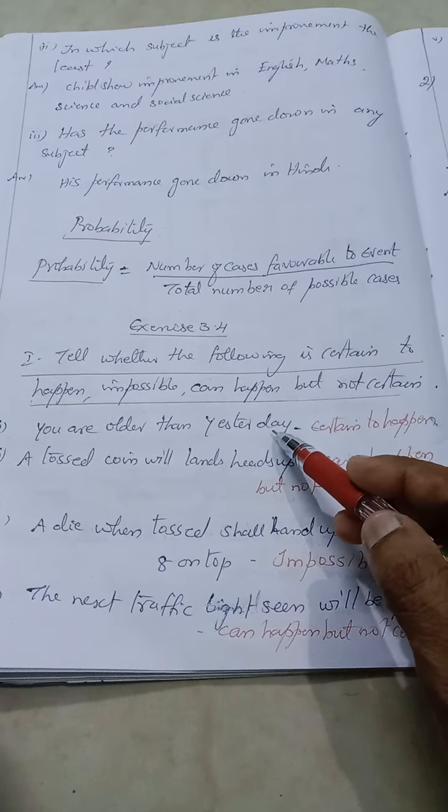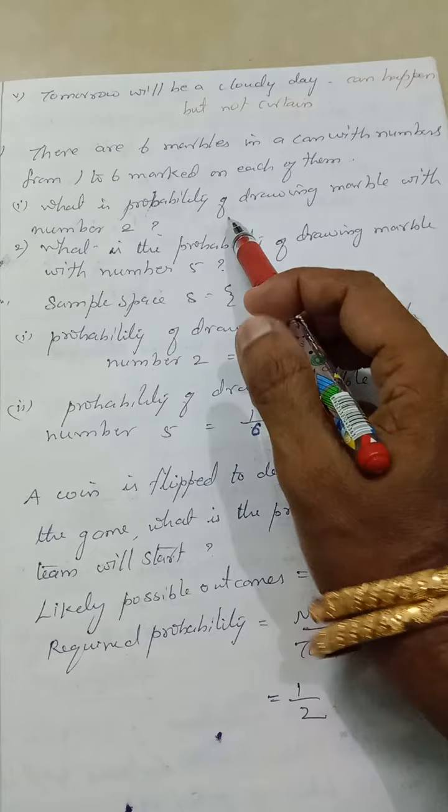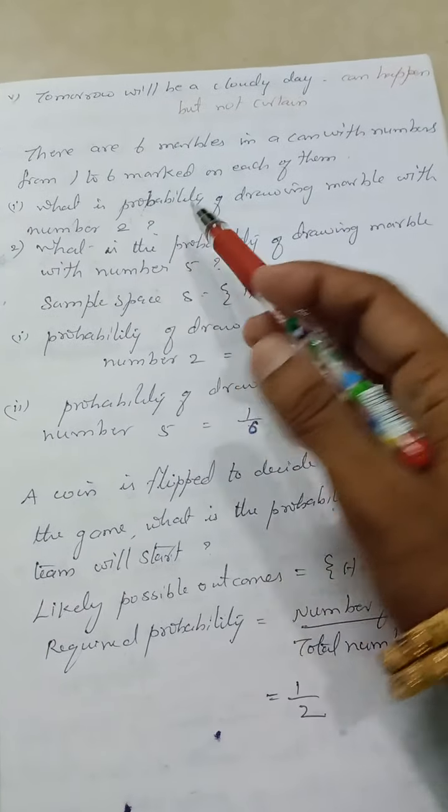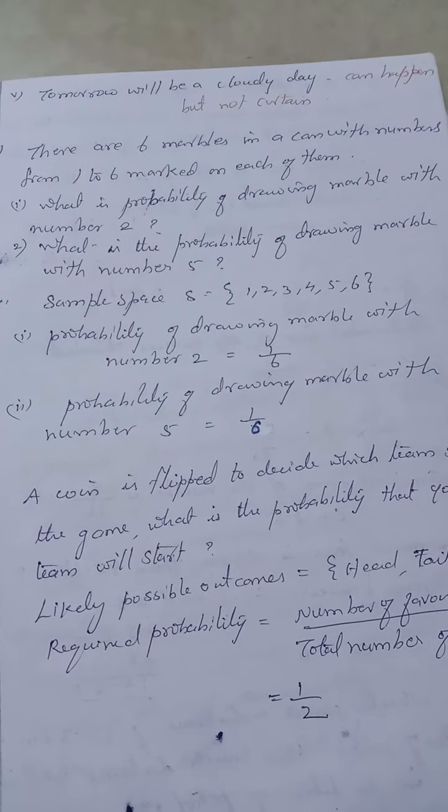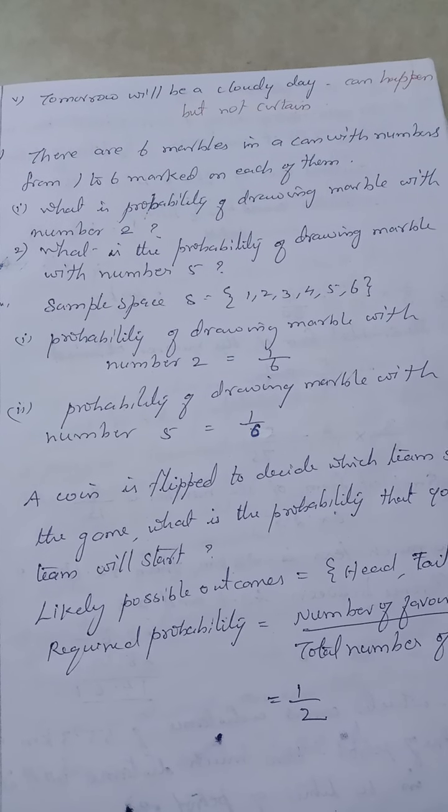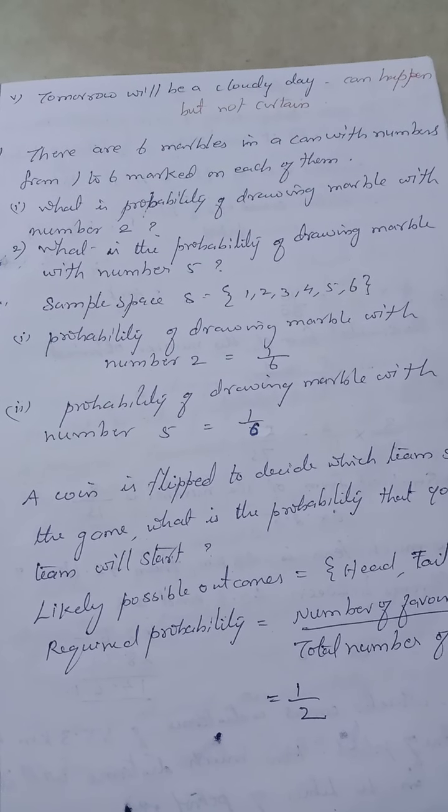Then come to the second problem. What they've given in the second problem: there are six marbles in a can with a number one to six. So six marbles I'm naming one, two, three, four, five, six and putting in a can.